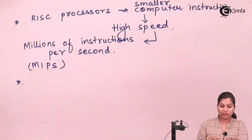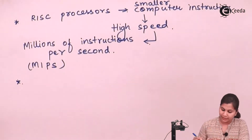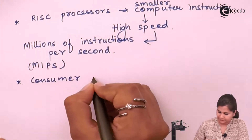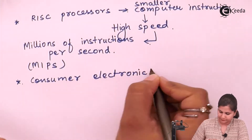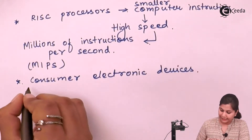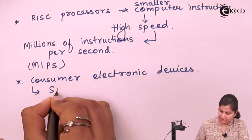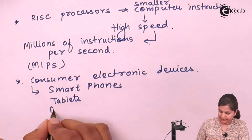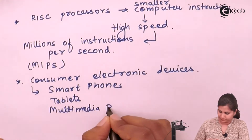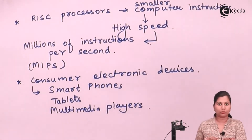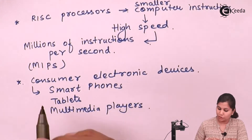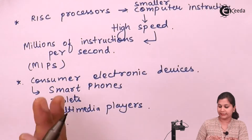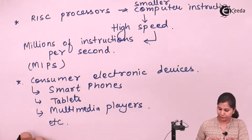If we talk about the applications of the ARM processor, these processors are extensively used in consumer electronic devices. Examples of these consumer electronic devices are smartphones, tablets, multimedia players, and other mobile devices such as wearables. So smartphones, tablets, and multimedia players are examples of devices using ARM processors.